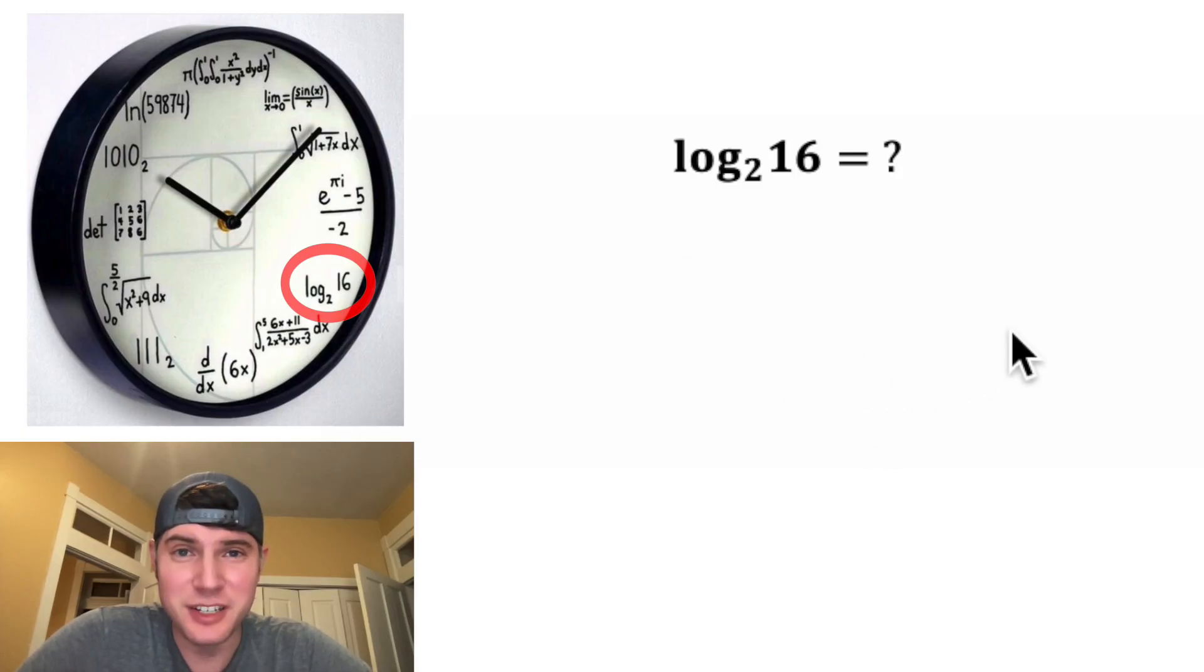Next, we have log base two of 16. This logarithm is the inverse of an exponential. It ultimately means two to what power gives us 16? And 16 is two to the four, so that means our question mark is gonna be four. And that's why this represents four o'clock.